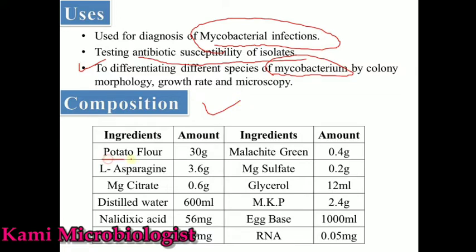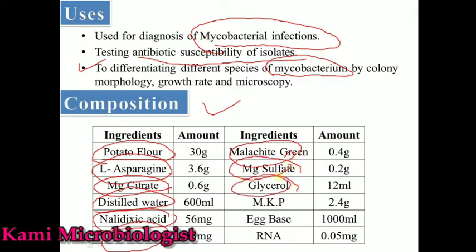This media mostly contains: potato flour 30g, L-asparagine 3.6g, magnesium citrate 0.6g, distilled water 600ml, nalidixic acid 56mg, penicillin 53mg, malachite green 0.4g, magnesium sulfate 0.2g, glycerol 12ml, monopotassium phosphate 2.4g, egg base 1000ml, and RNA 0.05mg.